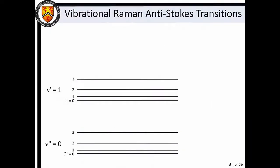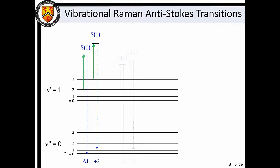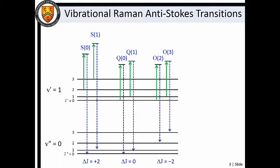Vibrational anti-Stokes transitions are associated with relaxation of a vibrationally excited molecule. The transitions are also subject to the delta J equals plus two, zero, and minus two selection rule. In this case though, the O branch is to low wave number of the Q branch, which is to low wave number of the S branch.